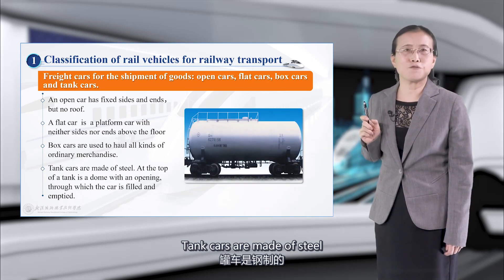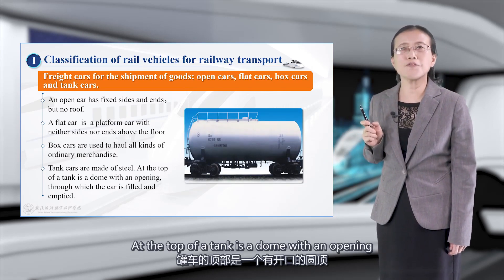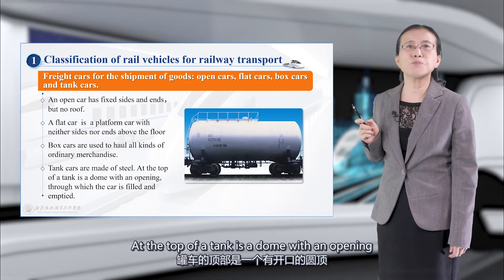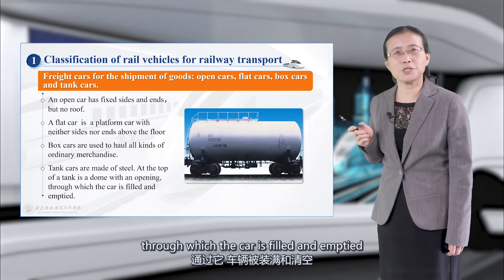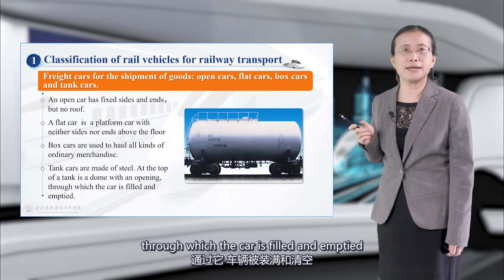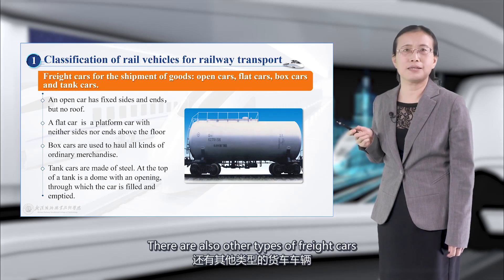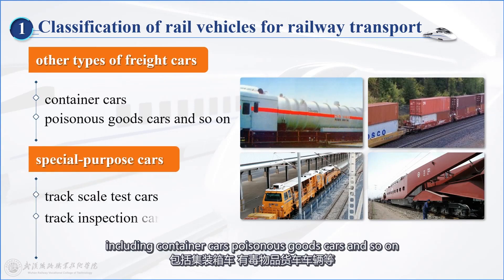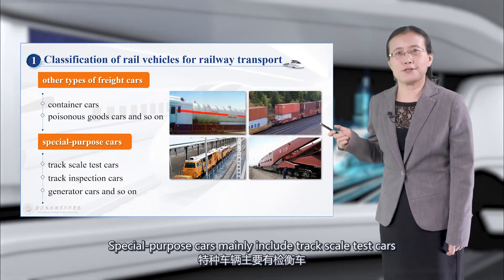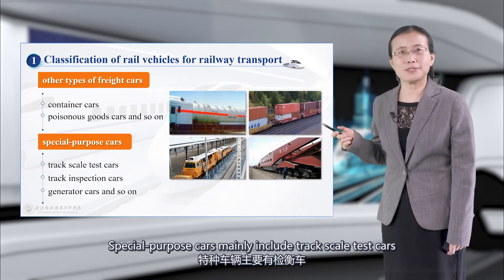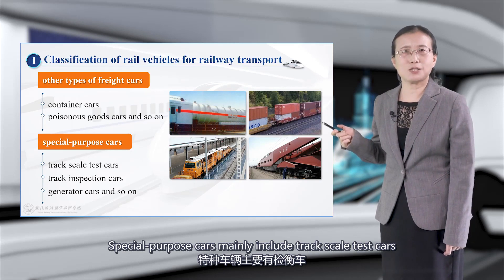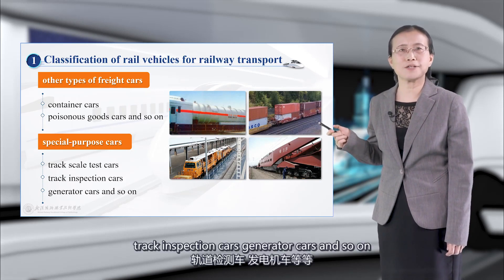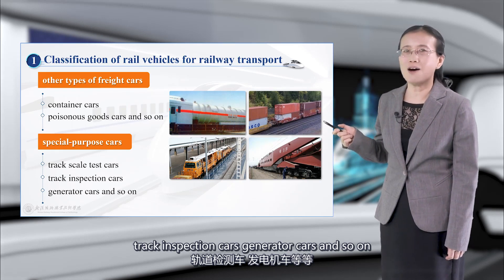Tank cars are made of steel. At the top of a tank is a dome with an opening through which the car is filled and emptied. There are also other types of freight cars, including container cars, poisonous goods cars, and so on. Special purpose cars mainly include track scale test cars, track inspection cars, generator cars, and so on.